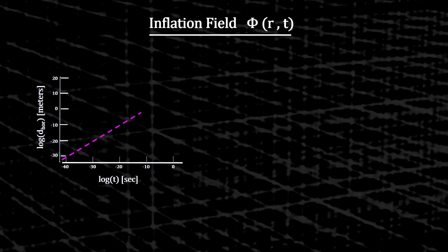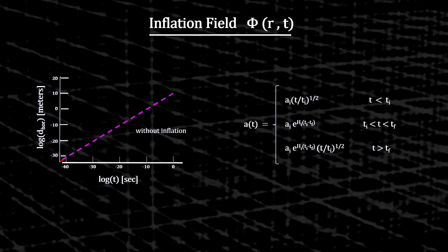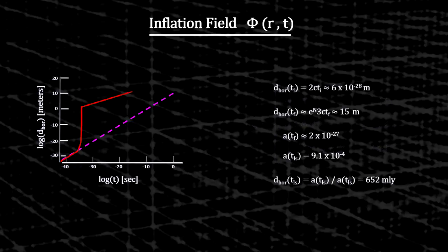The horizon distance at the start of inflation would have been submicroscopic. The horizon distance at the end of inflation, a tiny fraction of a second later, would have been the size of a whale. And the horizon distance at the time of last scattering would have been 652 million light-years, 800 times larger than without inflation. This puts every particle in the decoupling process that created the CMB into causal contact with every other particle, easily enabling thermal equilibrium.